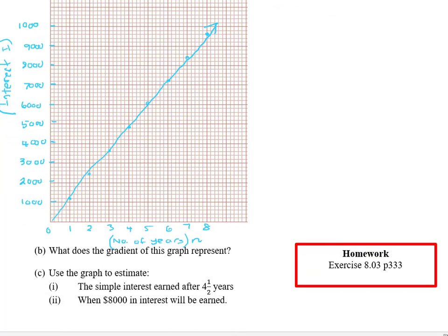So my couple of questions are use the graph to estimate the simple interest earned after four and a half years. So what you need to do is you need to go along the bottom until we get to four and a half years which is halfway between these boxes here. Let me see if I can get another color pen. And you're going to use a ruler. So in the HSC they're going to expect you to use a ruler and to show how you got your information.